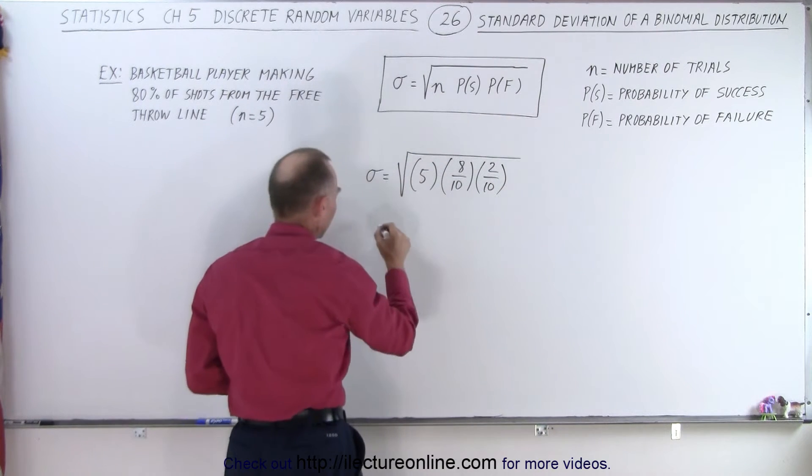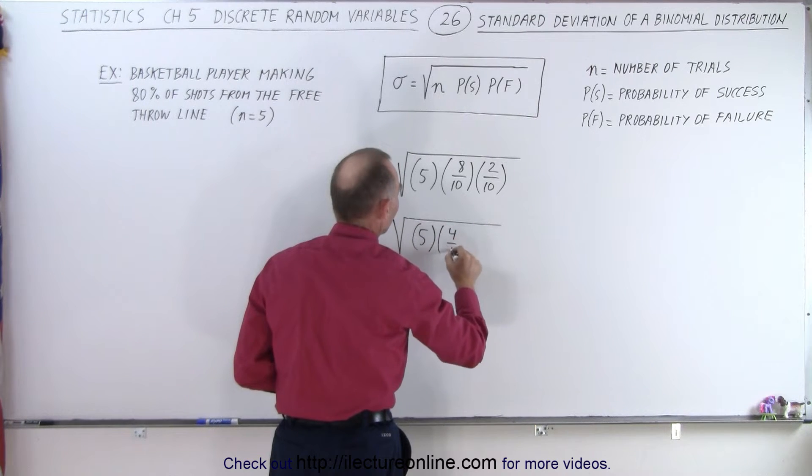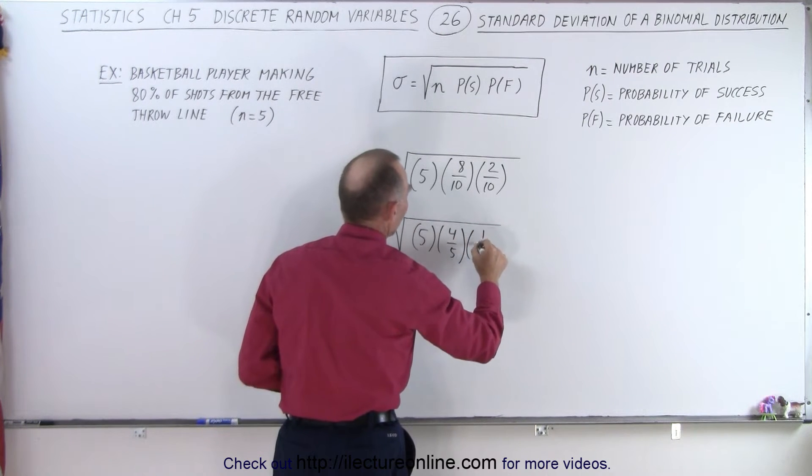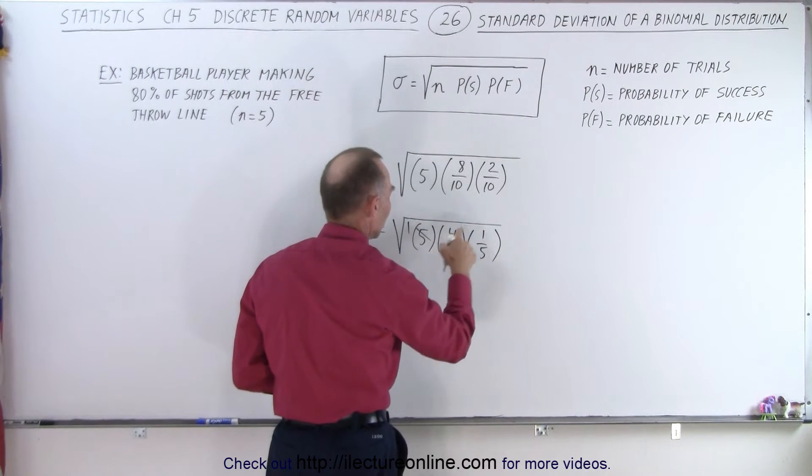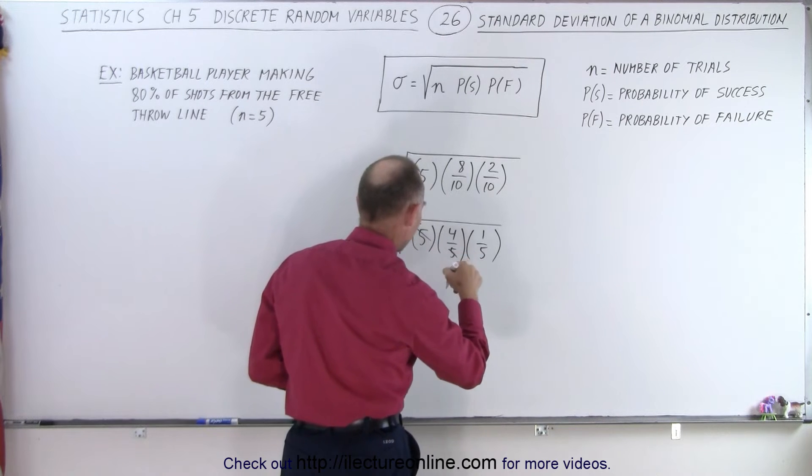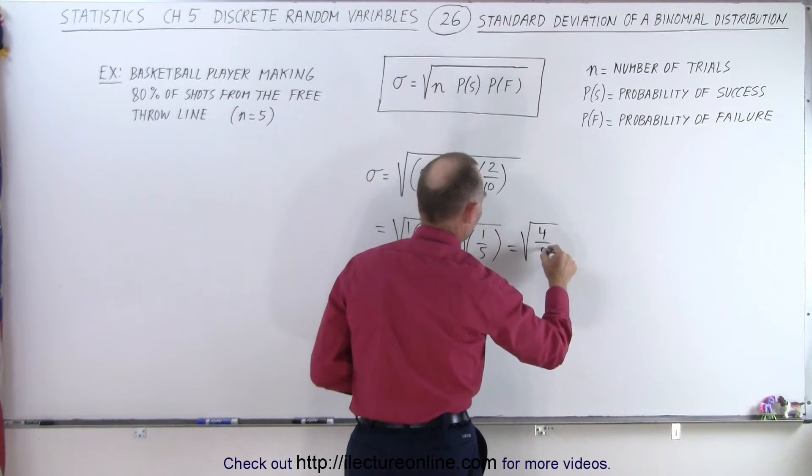Alright, so this is equal to the square root of five times four out of five times one out of five. And of course these two fives cancel out, we end up at four over five, so this is equal to the square root of four over five.